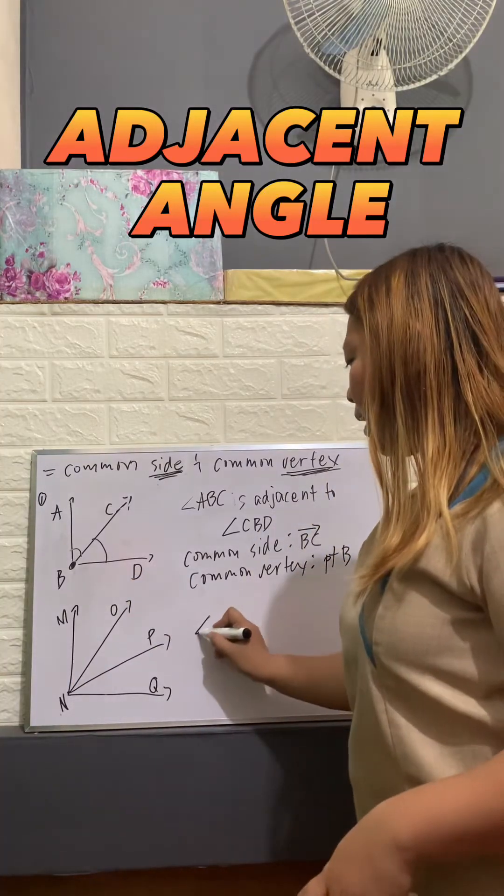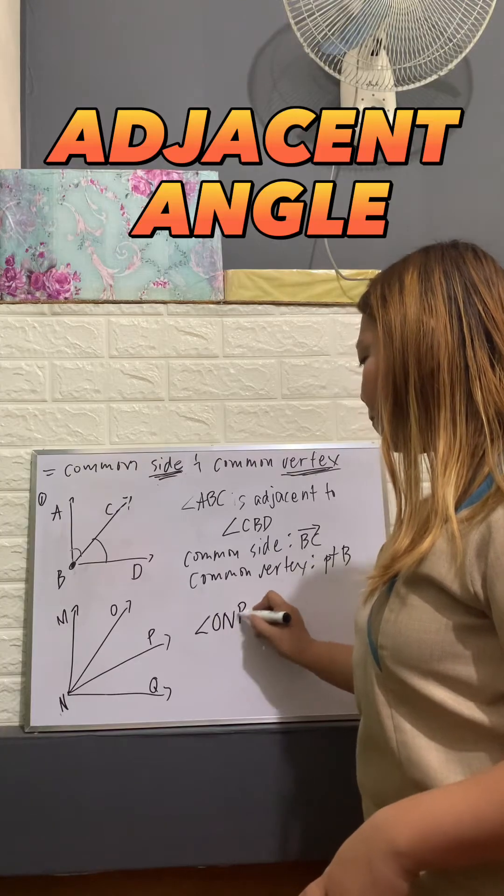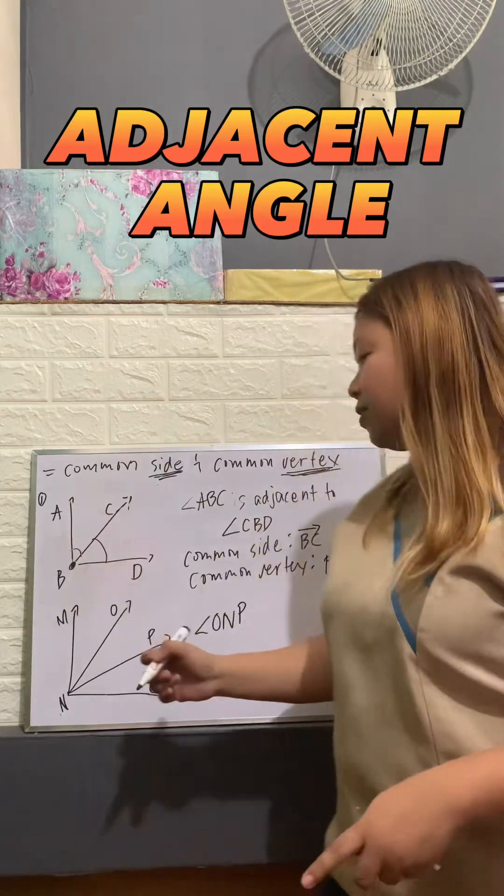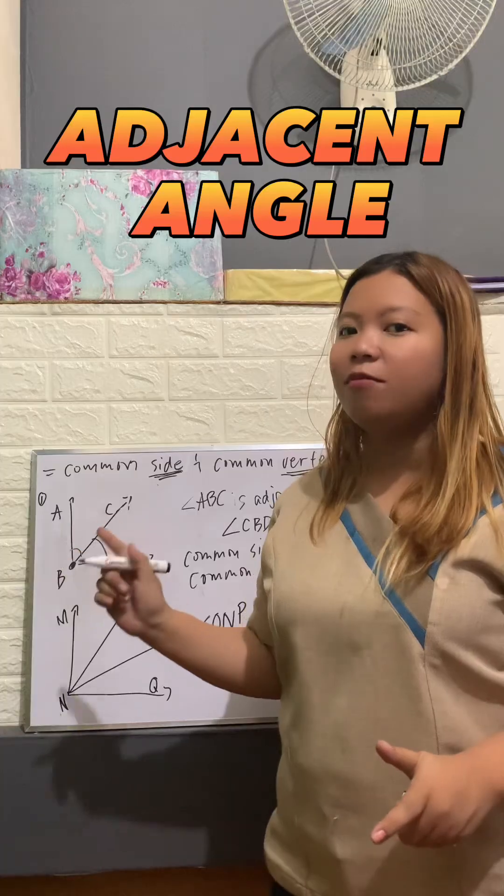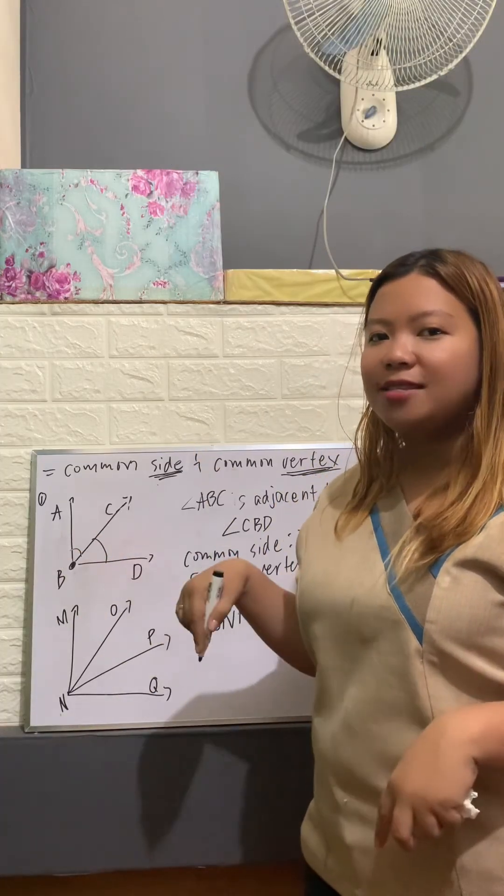Now if you have this figure and I take angle ONP, identify one angle that is considered adjacent to angle ONP and try to identify the common side and the common vertex. Write your answer in our comment section.